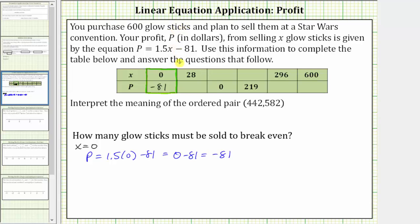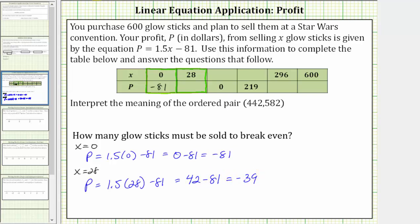In the next column, we're given X equals 28. We need to find the corresponding P value, so we substitute 28 for X. When X equals 28, P equals 1.5 times 28 minus 81. 1.5 times 28 equals 42, so this simplifies to 42 minus 81, which equals negative 39. The ordered pair is (28, -39), meaning if 28 glow sticks are sold, there's a loss of 39 dollars.